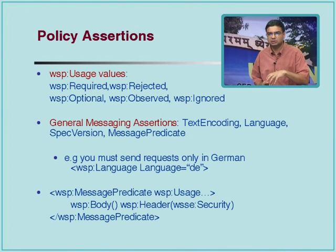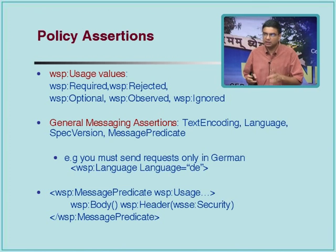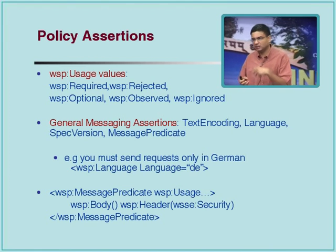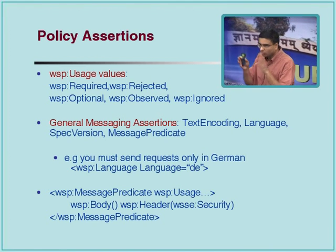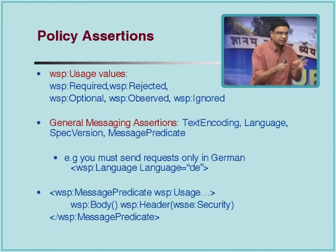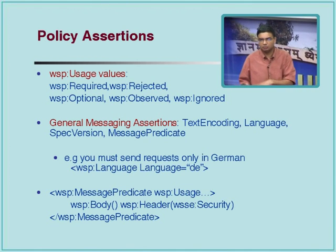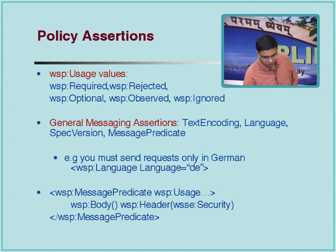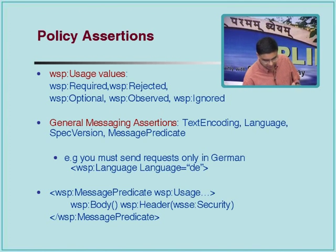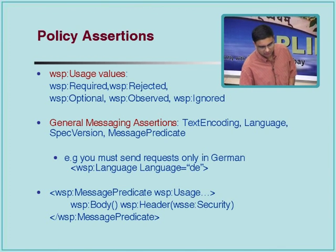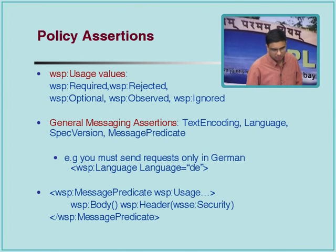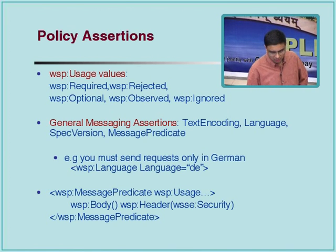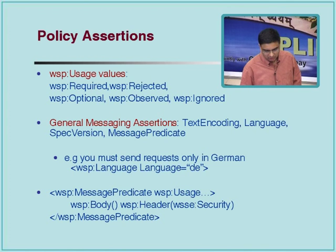We collect all of these expressions into a larger entity and those can be attached to different things. You write a set of policy expressions, you can group them in some way, and then you can attach this group to a service. The WSP usage values include standard ones: the policy is required, it's optional — this preference notion is expressed this way — it is observed, ignored, and so on.